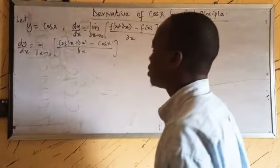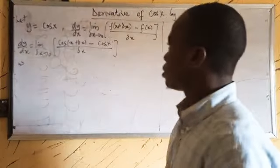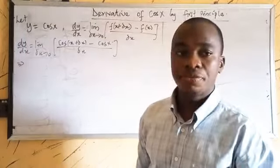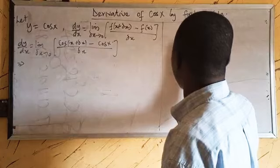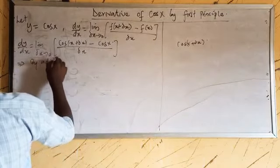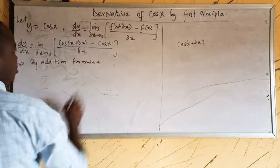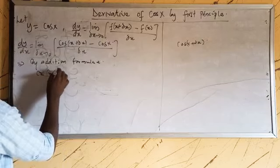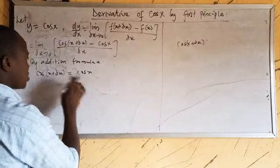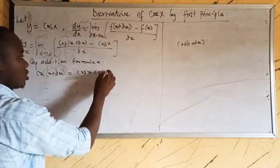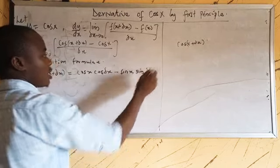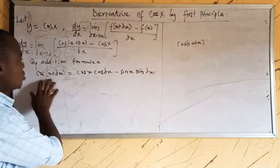The next thing we are going to do is expand the numerator. We expand using the addition formula. Using the cosine addition formula, cos(x + Δx) equals cos x · cos(Δx) minus sin x · sin(Δx).